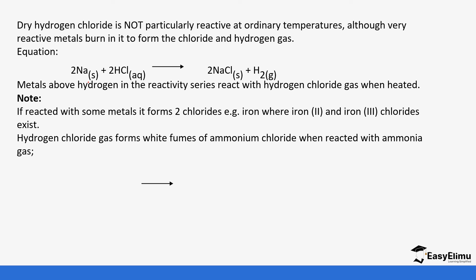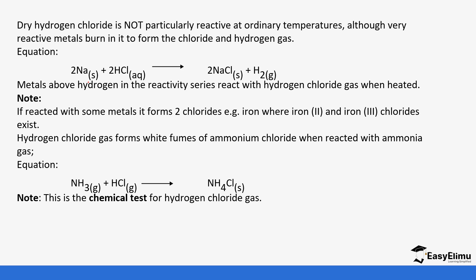Hydrogen chloride forms white fumes of ammonium chloride when it reacts with ammonia gas. This is actually the chemical test for hydrogen chloride — to test for its presence, introduce ammonia at the mouth of the test tube containing the gas; if white fumes appear, that confirms the presence of hydrogen chloride. The white fumes are ammonium chloride.